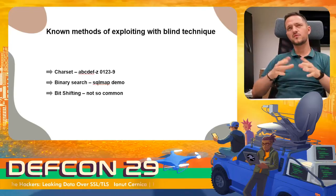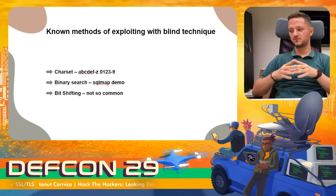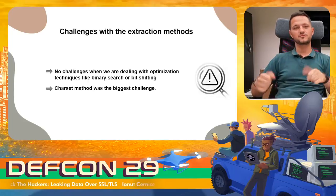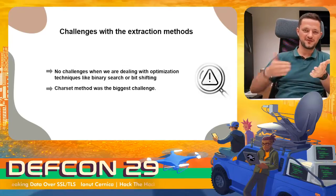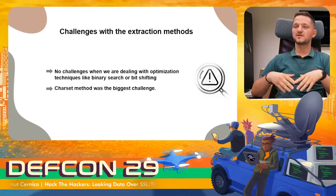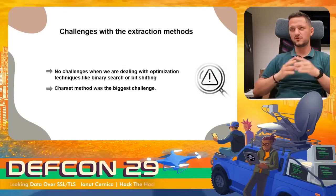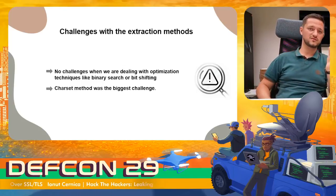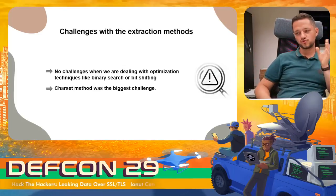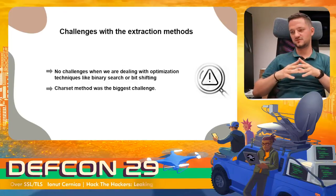Bit shifting is not so common, but it is a known method and I encountered it in a tool doing SQL injection. Challenges with the extraction methods: there are no challenges when dealing with optimization techniques like binary search or bit shifting, because we already know how they work and it is easy to reverse the steps. The biggest challenge comes with the Charset method, because we don't know where the letters are — whether the hacker started with letters then digits, or digits then letters. You need to brute force the position by rotating the output and applying text recognition to extract the database.